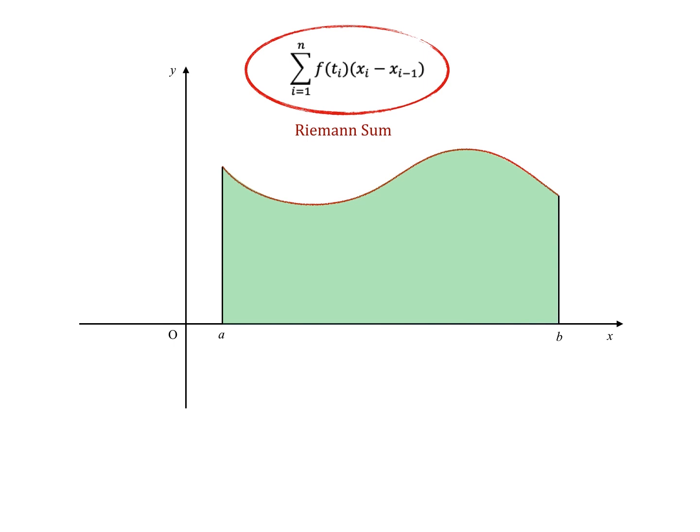In other words, if it exists, then the limit when n approaches infinity of the Riemann sum will be equal to the area under the graph. We call this limit of the Riemann sum the Riemann integral.